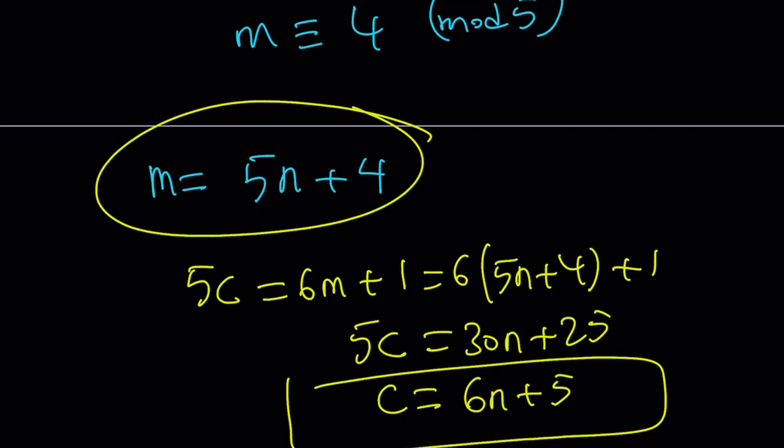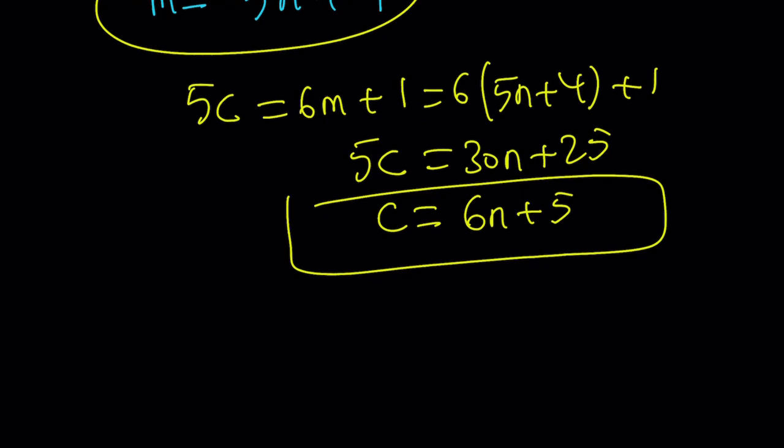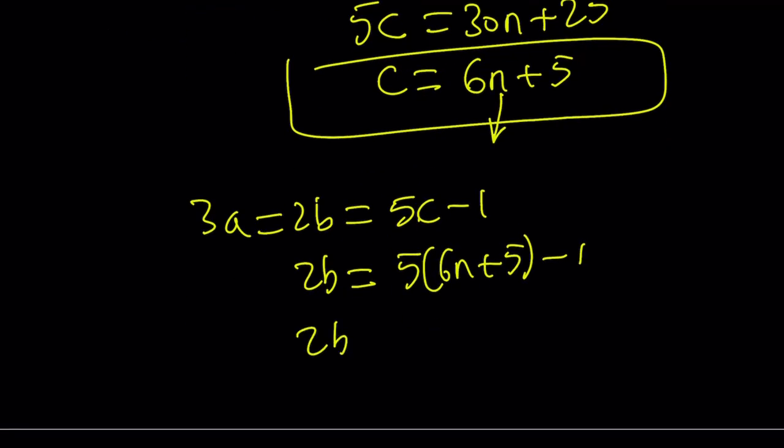So that's going to be the c value in terms of n. We have m in terms of n. But we also want to find a and b in terms of n. Right? So how do you do that? Well, remember, we had 3a equals 2b. And that was equal to 5c minus 1. And that was equal to 6m. So whatever you want to use here doesn't really matter. You can use m or c. Let's just use c. Forget about m. And let's go ahead and use that. Since c can be written like this, I can go ahead and plug it in. 2b equals 5 times 6n plus 5 minus 1. And 2b equals 30n plus 25 minus 1, which is 24. Divide everything by 2. You get b equals 15n plus 12.